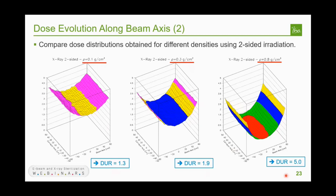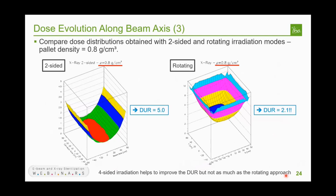Fortunately, there are ways to improve dose uniformity for high-density products. Using a rotating system — where the product rotates in front of the target instead of translating along the conveyor — the center of the product always stays in front of the beam and is always receiving dose, while a point at the surface only spends a limited time in front of the target. Instead of obtaining a DUR of 5, using this rotating approach you can improve it down to 2.1.